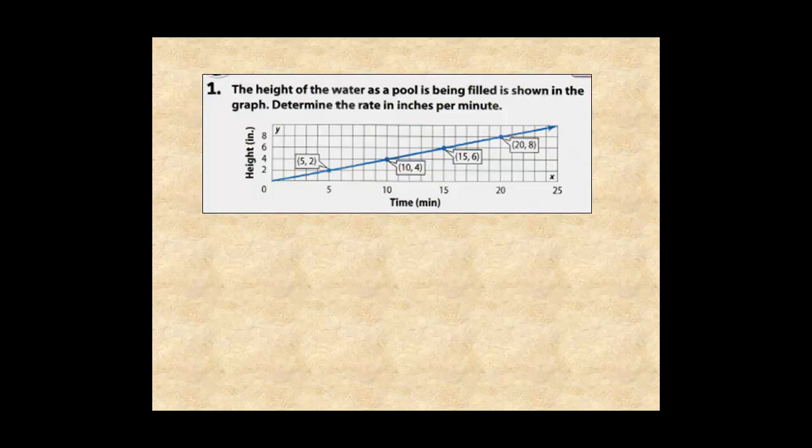In example 1, the height of the water in a filling pool varies directly with time. This line is a graph of the direct variation, and the slope of the line is the rate at which the pool is filling.